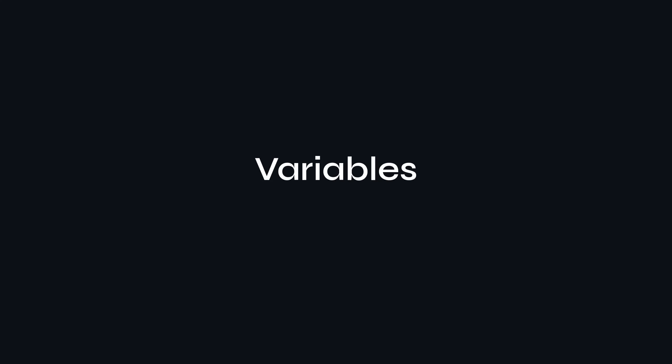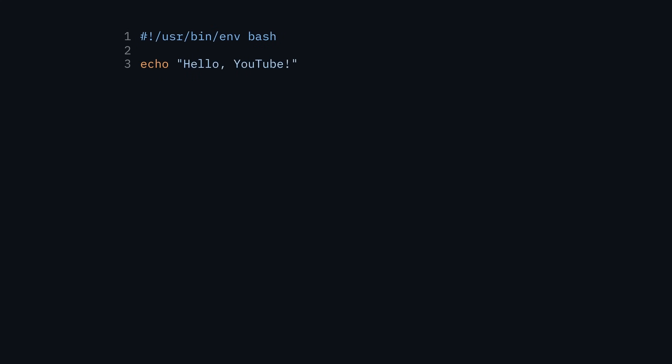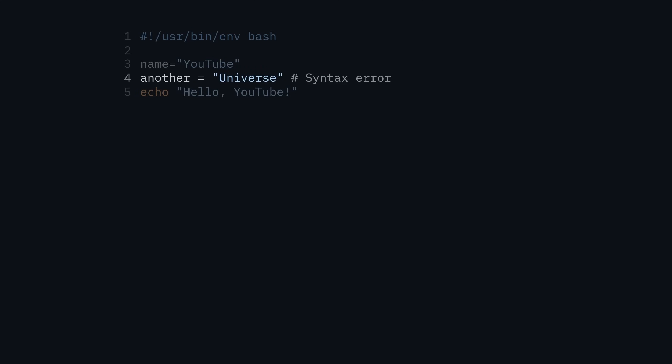Everything so far has been static. One of the powers of using a language is you can parameterize things. Variables in bash aren't defined with let, const, or var — it's just the variable name, then equals. Importantly, you can't have spaces around the equal sign. It has to be name=youtube. If you try spaces around the equal sign, bash sees it as a command with arguments and throws an error. To reference the variable, you use a dollar sign and then the variable name. If you use single quotes instead of double quotes, it doesn't do variable expansion and prints the literal characters.